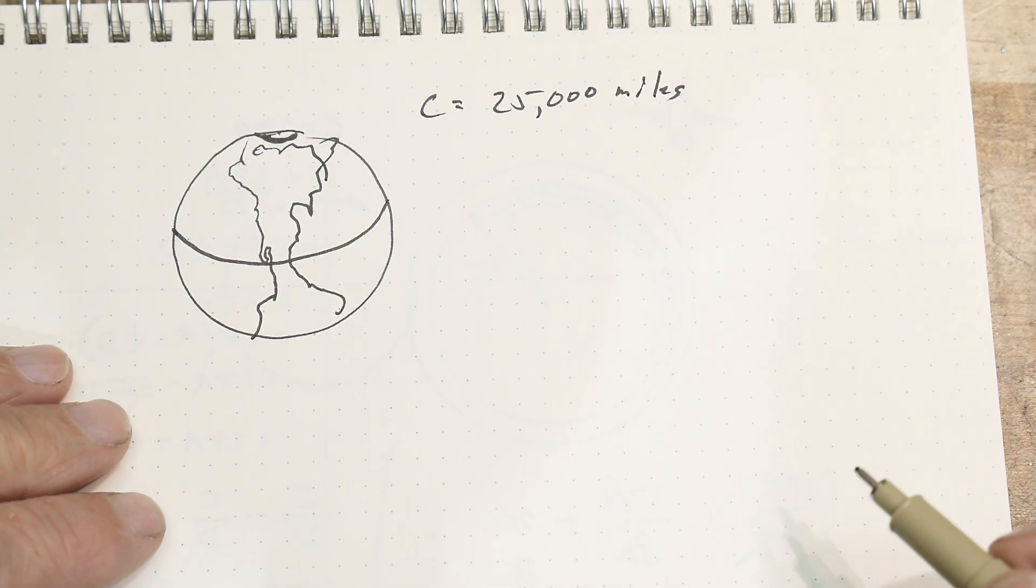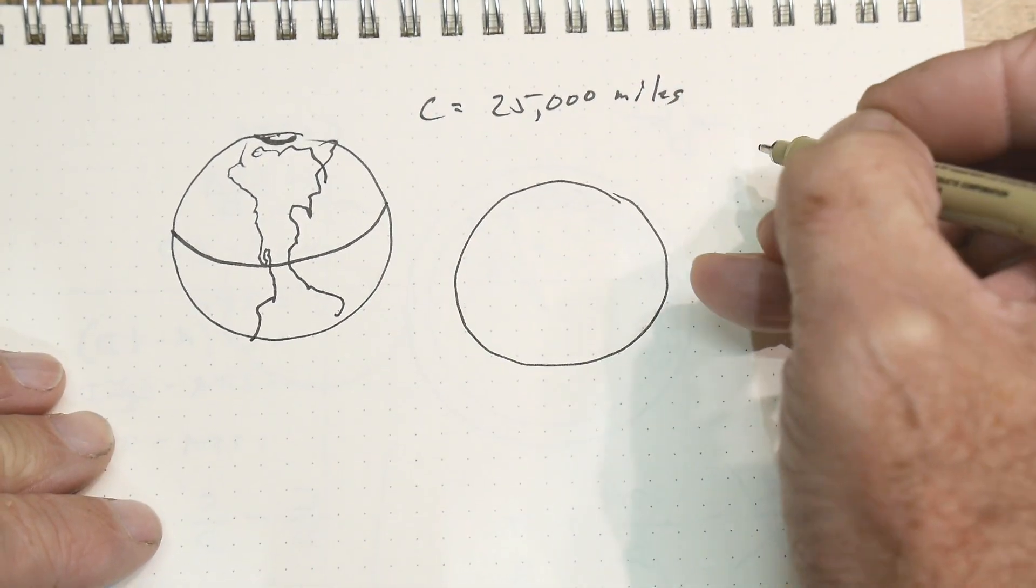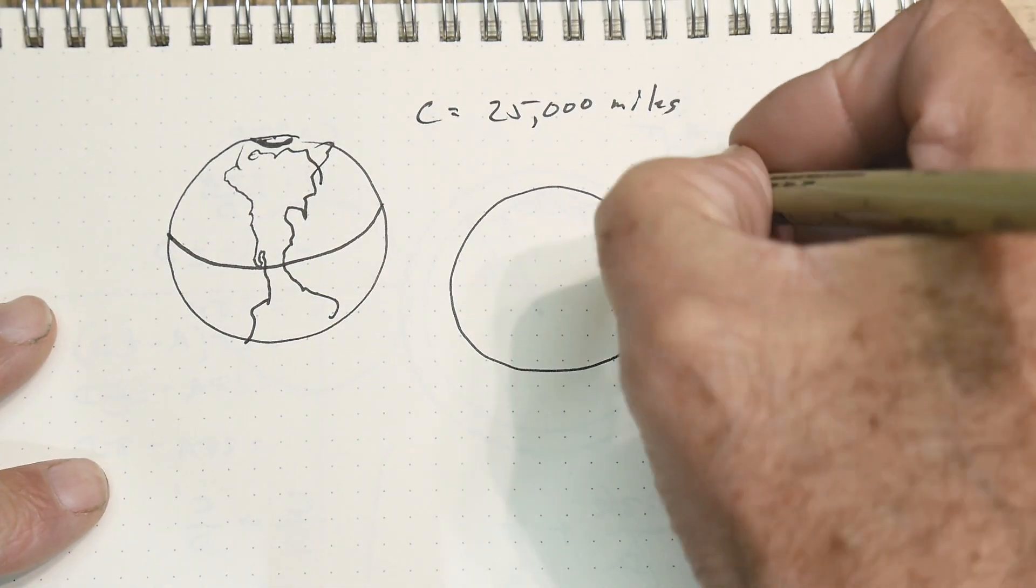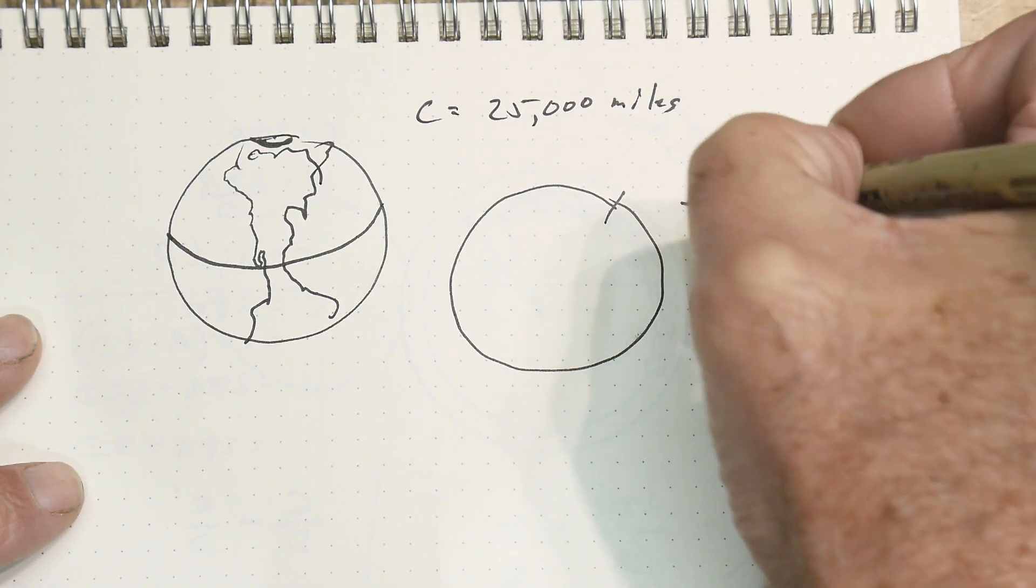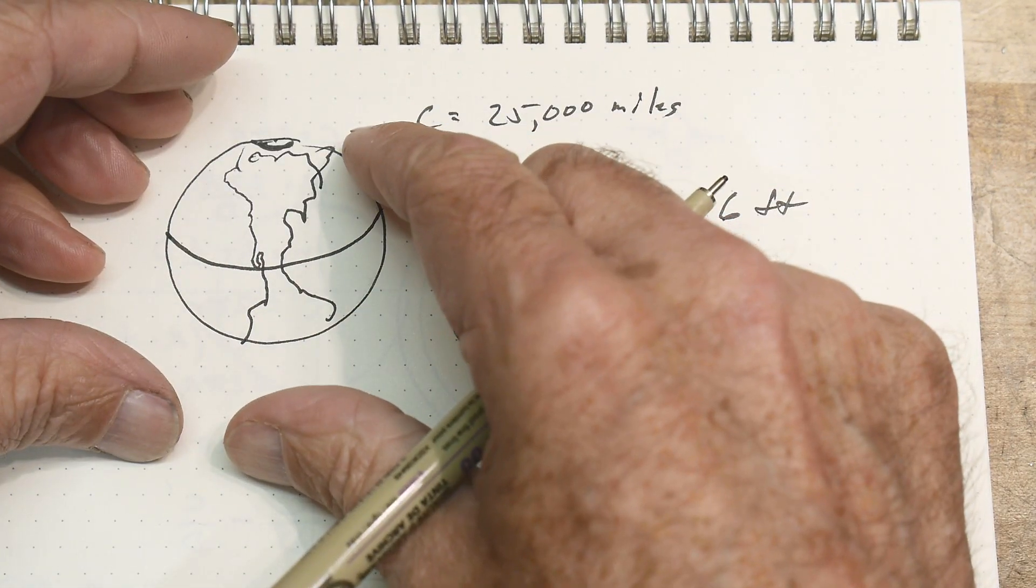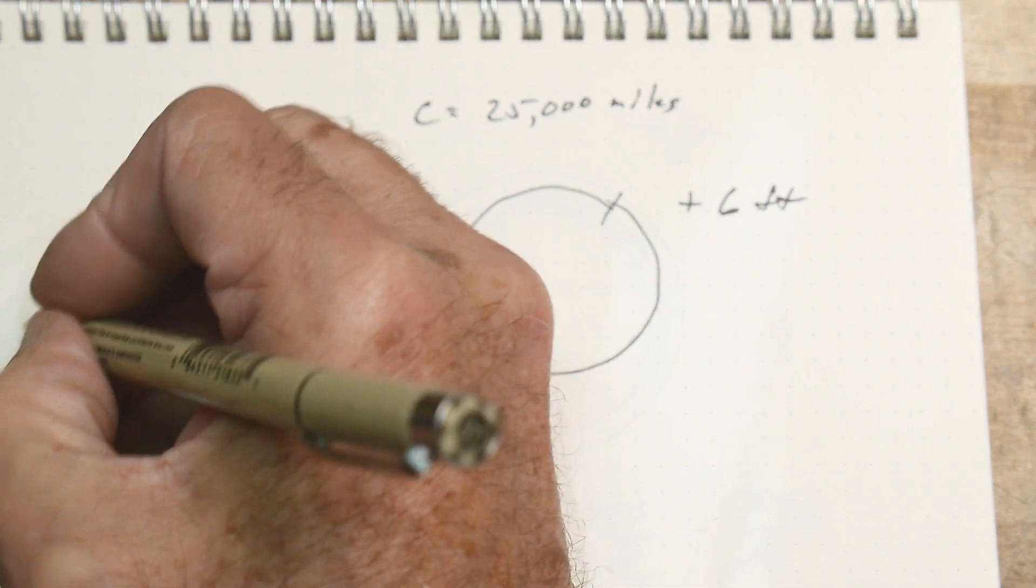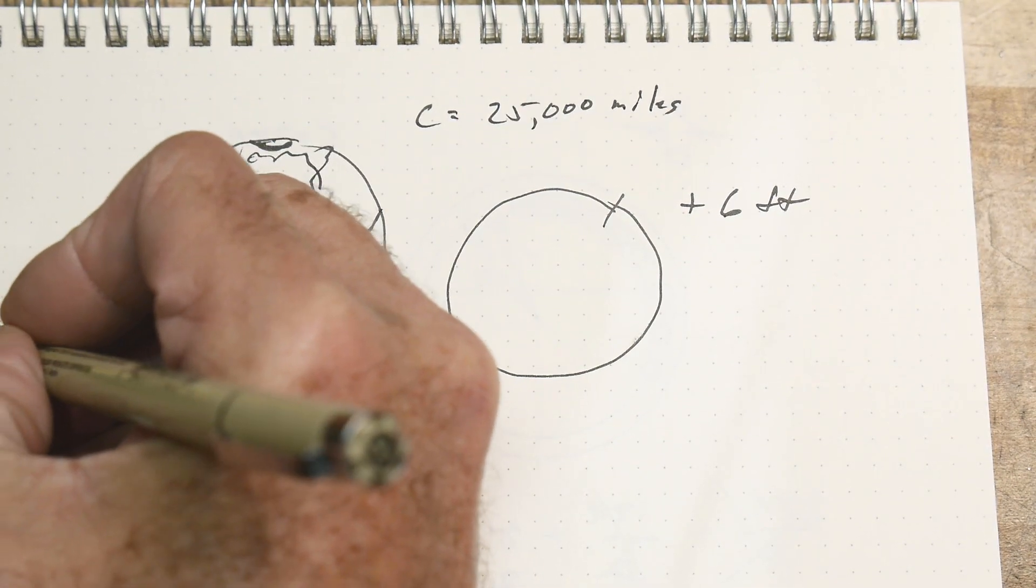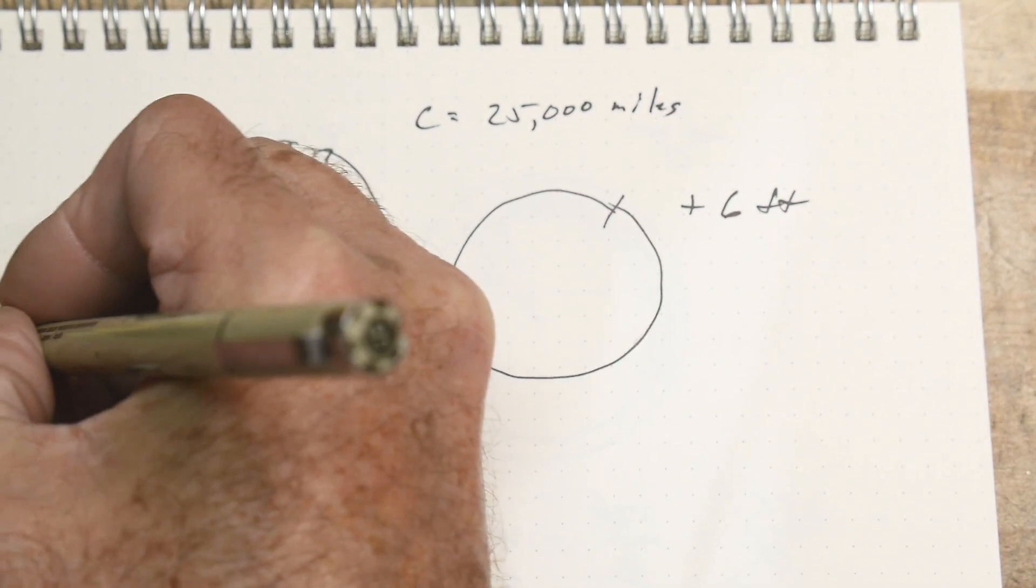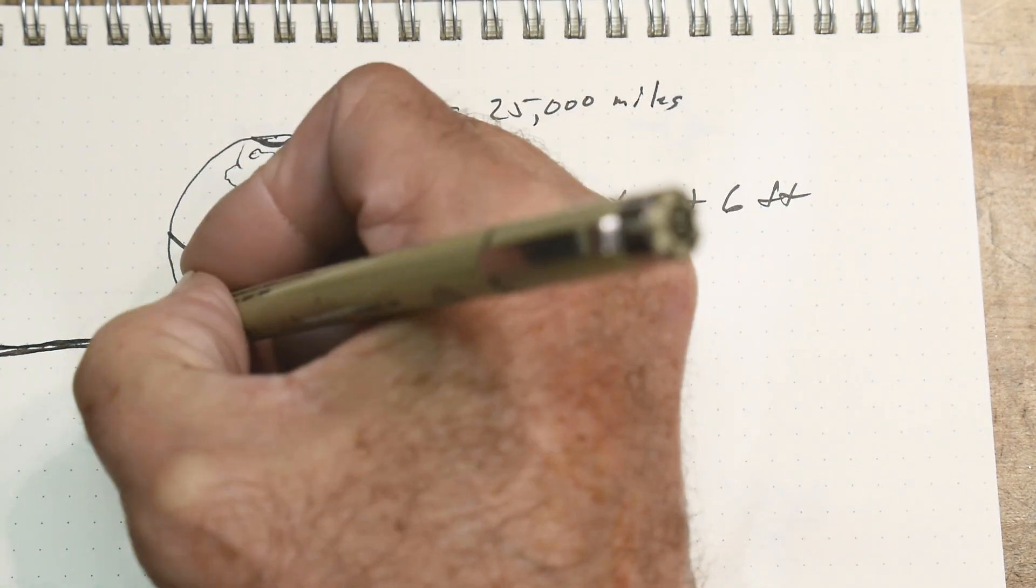Then he says, let's take that piece of string. Okay. So we have this piece of string. And we're going to cut it. Okay. And we're going to open it up and we're going to add six feet. Okay. We're going to add six feet of string. Okay. And then we're going to try to measure how far above the earth. So here's the surface of the earth. And here's the string. The string used to be right there. And now the string is just a little tiny bit above the earth, right? Tiny, tiny bit above the earth. And we're only adding six feet. So it's a tiny, tiny bit above the earth.